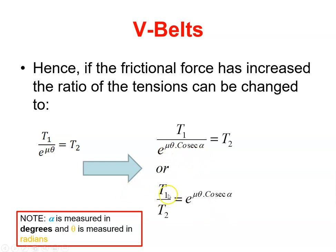For a V-belt arrangement, T₁ over T₂ equals e to the μθ cosecant alpha. What we have to be careful of here is θ is in radians, and α is in degrees.